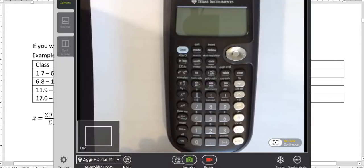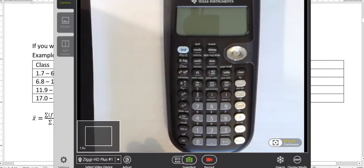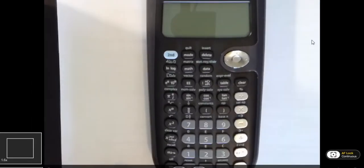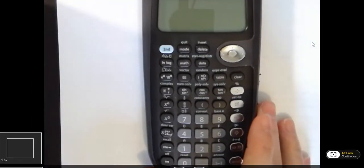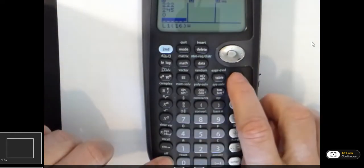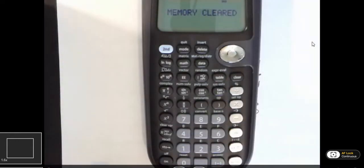Always when I'm using the calculator, I want to clear out any old values before I get started. So I'm going to start by pushing on, holding that down, and pushing clear twice. That's going to clear all of my memory.